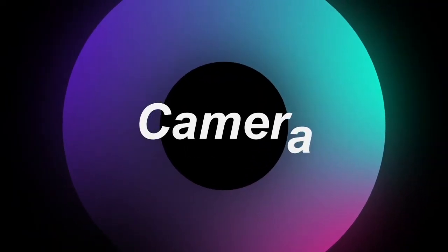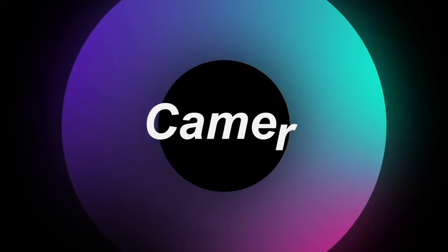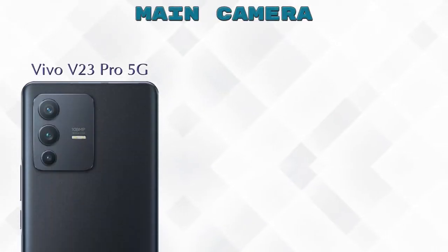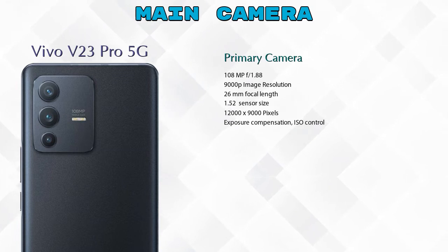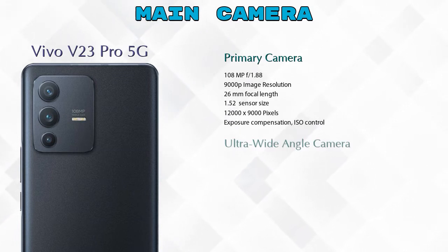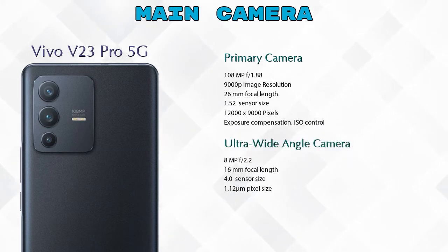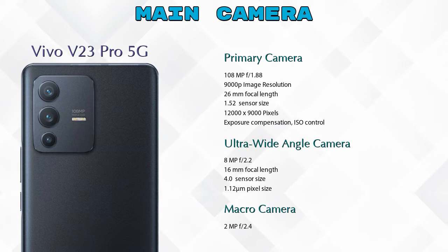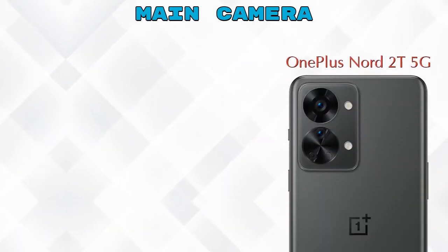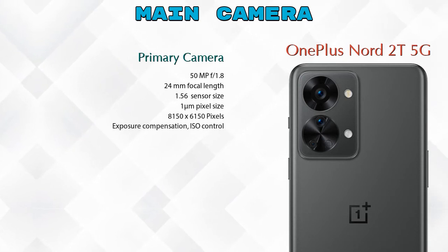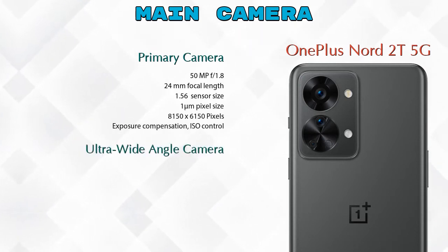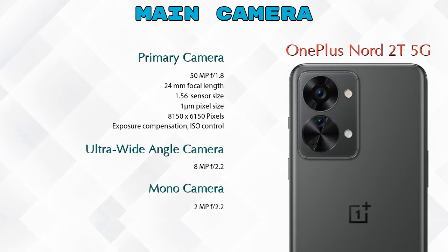Now let's see the details about our favorite feature — camera. Talking about the rear camera, we can see three cameras in V23 Pro 5G: a primary camera, an ultra-wide angle camera, and a macro camera. Nord 2T 5G also has three cameras: a primary camera, an ultra-wide angle camera, and a mono camera.